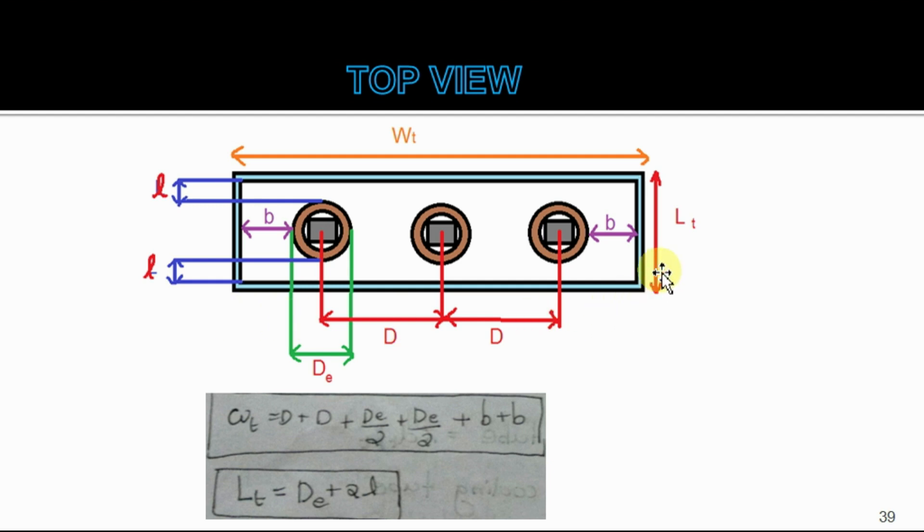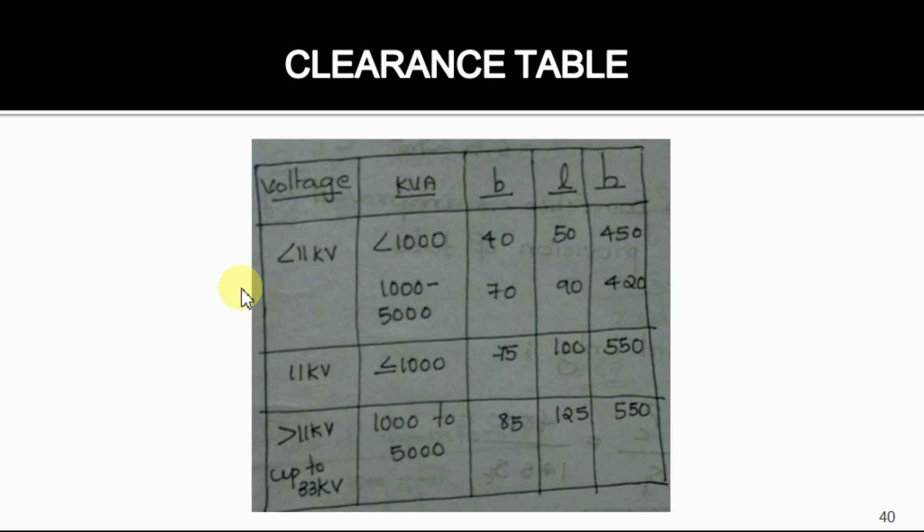Depth of tank is d_e plus 2l. According to voltage and kVA, the length of hb and l changes, and it is given in this table.